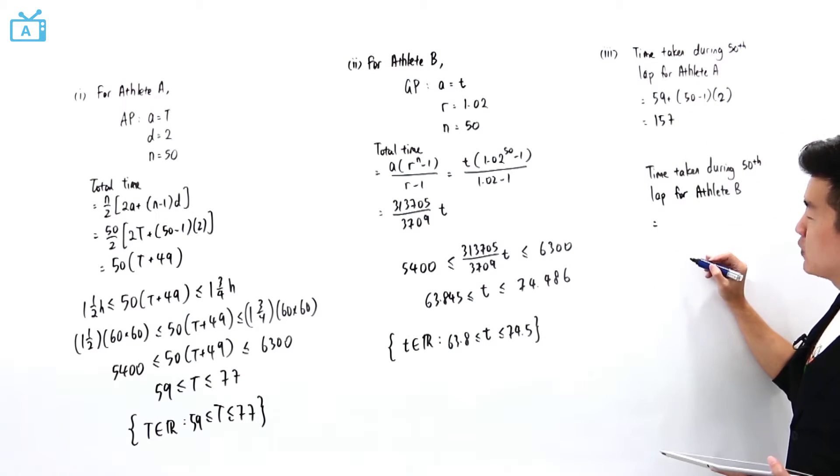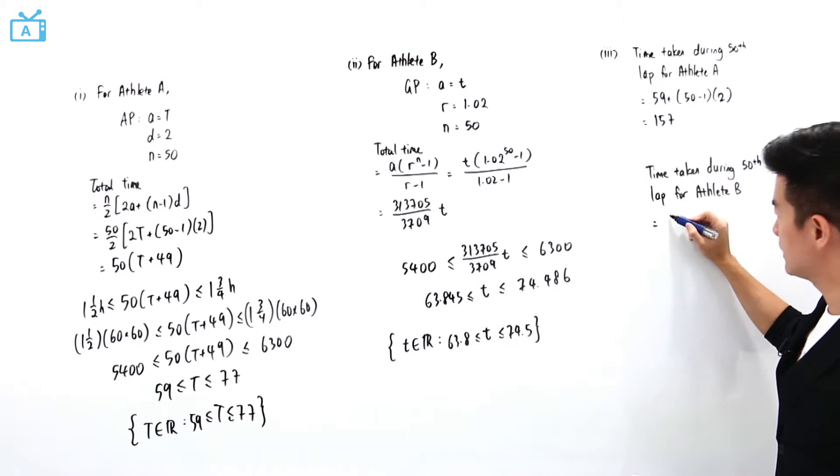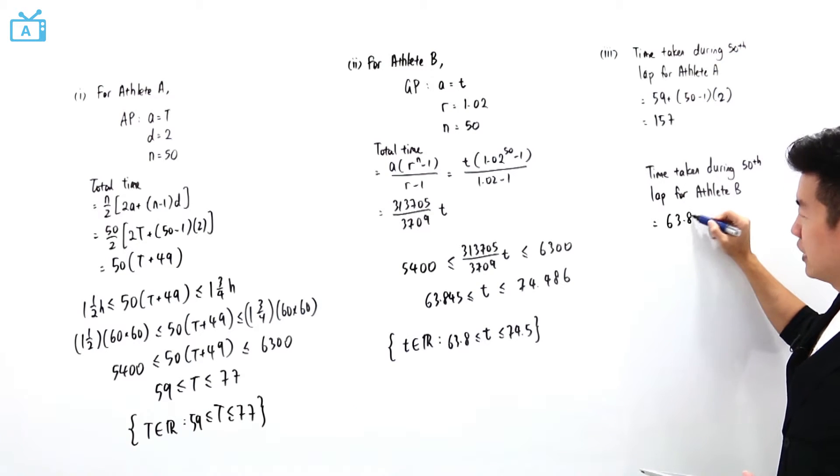As for athlete B, we're going to use the GP formula. The first term is 63.845 times R to the power of (n minus 1). R is equal to 1.02, so it's 63.845 times 1.02 to the power of (50 minus 1).